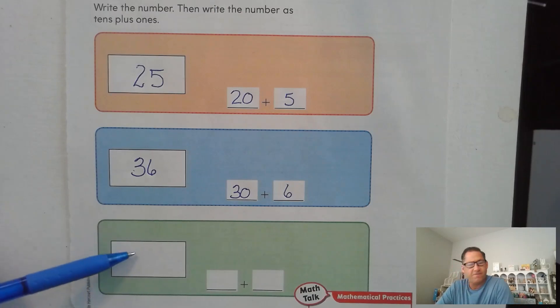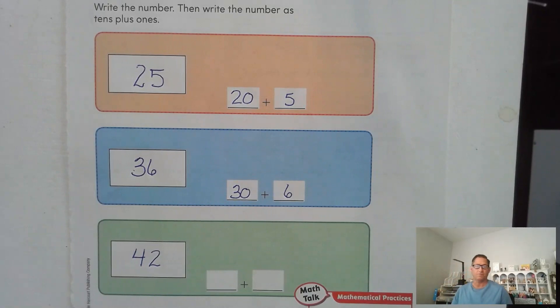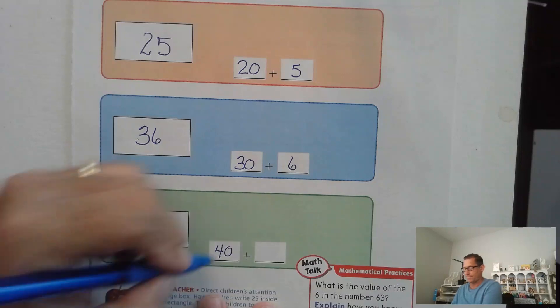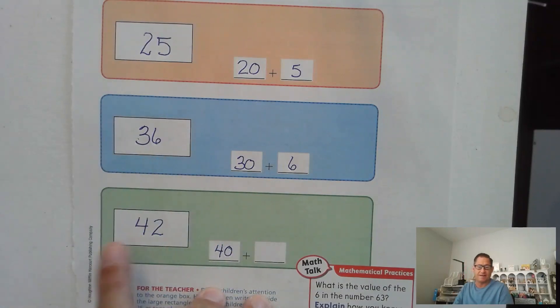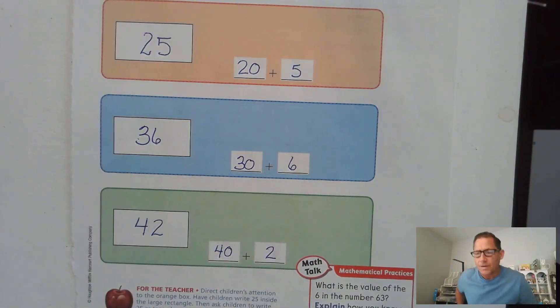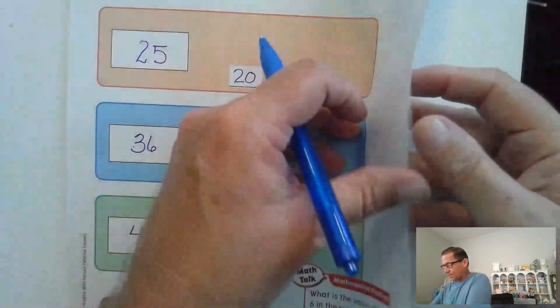And in the green box, write the number 42, and then write it as a sum of tens and ones. Is this what you came up with? So 42. Four tens has a value of 40, which makes sense because we say 42. And two ones. So it's important to know how to break apart a two-digit number into tens and ones for today's lesson.